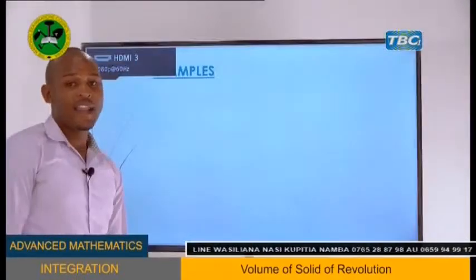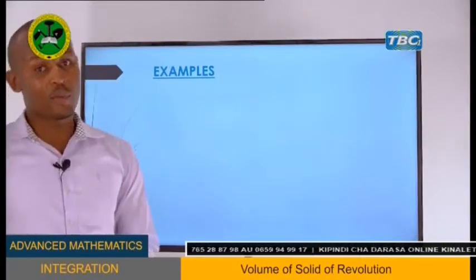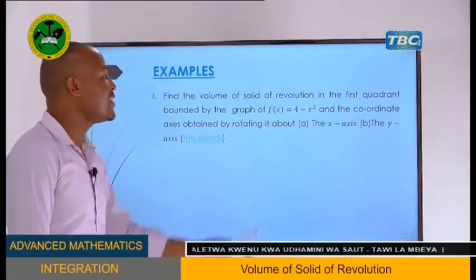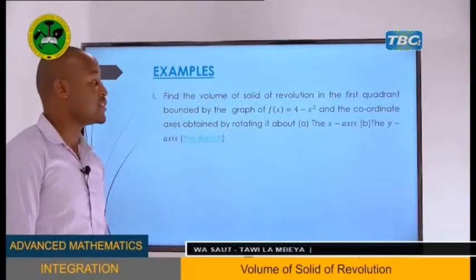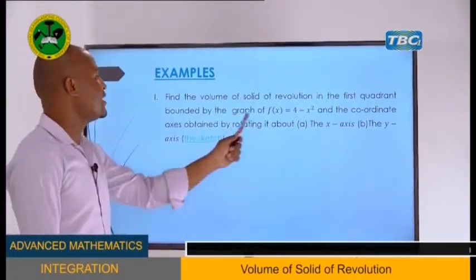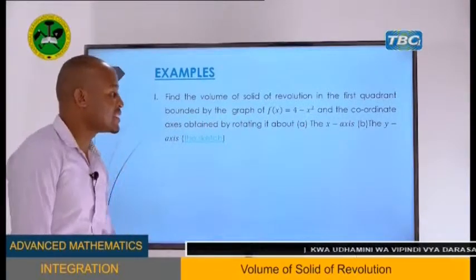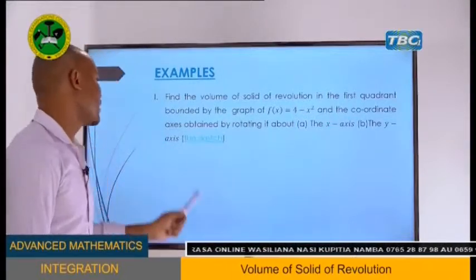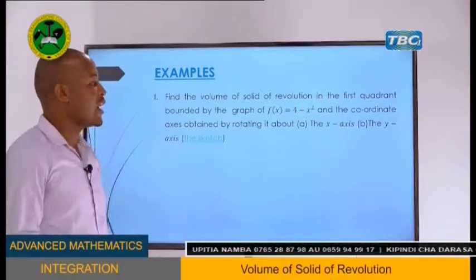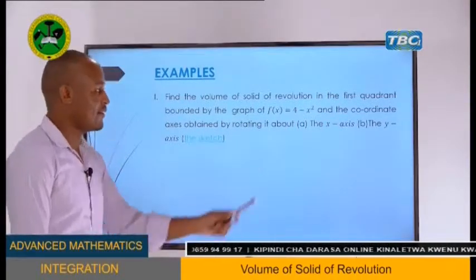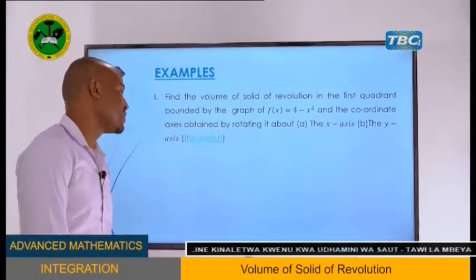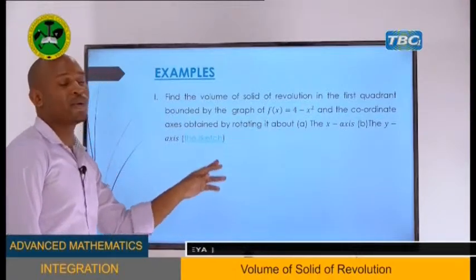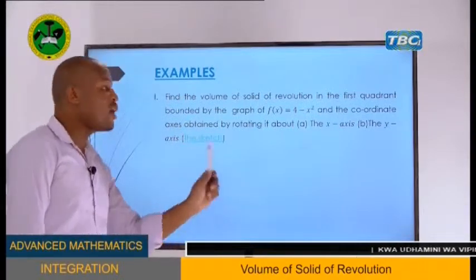Let's look at Example 1. Find the volume of solid of revolution in the first quadrant, bounded by the graph f(x) = 4 - x² and the coordinate axes — first by rotating about the x-axis, then about the y-axis. Before sketching, let's find the intercepts. Our function is f(x) = 4 - x².